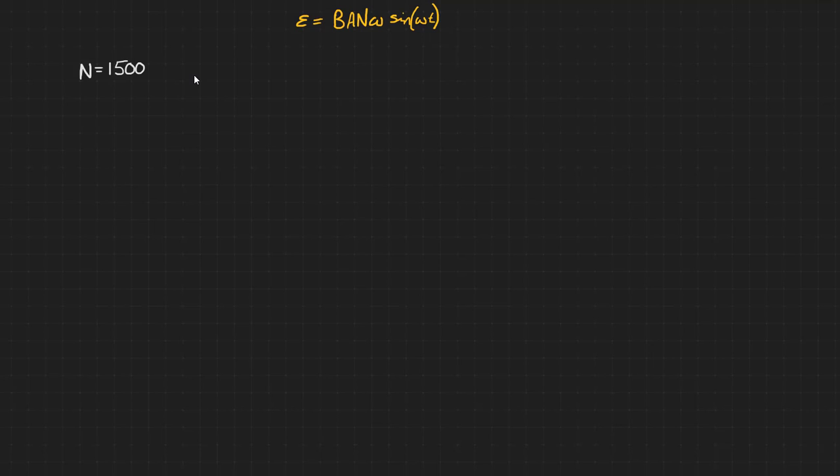A 1500 turn rectangular coil with sides 1.2 meters and 3.5 meters long is placed in a magnetic field of flux density 2 milliteslas. It is rotated at 3000 revolutions per minute beginning perpendicular to the magnetic field lines. Calculate (a) the maximum induced EMF and (b) the EMF induced 4 seconds after it starts rotating.